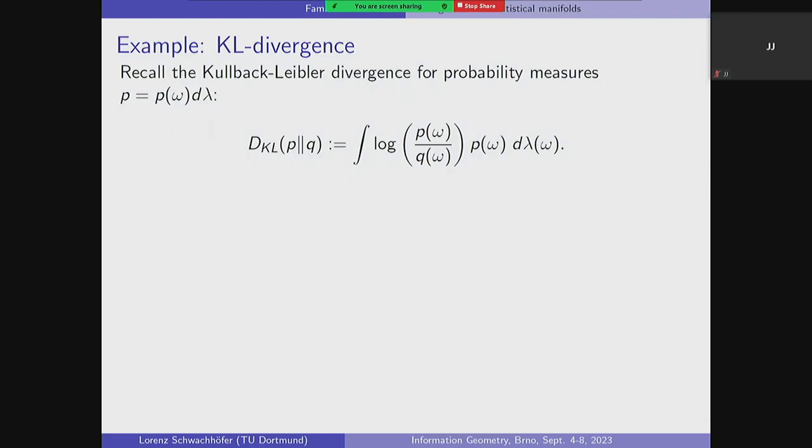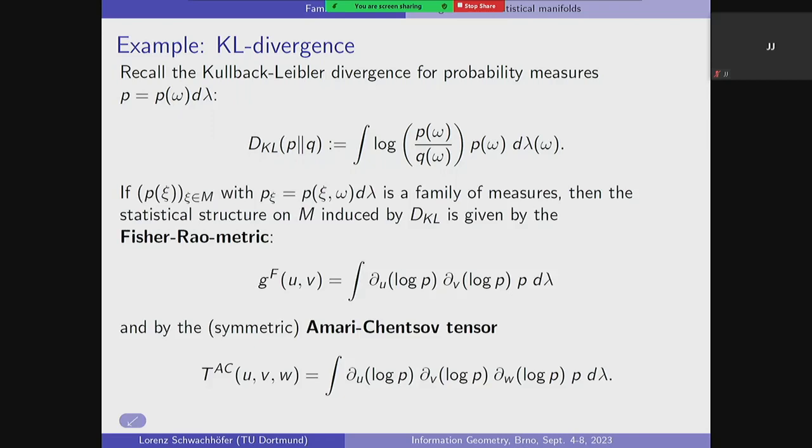Let's go back to examples. The Kullback-Leibler divergence is actually one of the most important in statistics. If you do this calculation, you get the so-called Fisher-Rao metric, given as: you take the derivative of log p and log q with respect to the parameters and integrate. That's what it turns out if you do the calculation. And this symmetric 3-tensor T is given in a similar form — you take the product of three of these log derivatives.